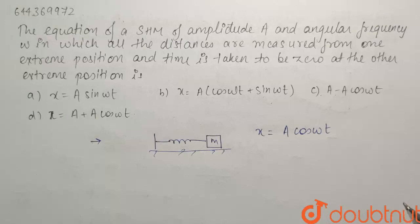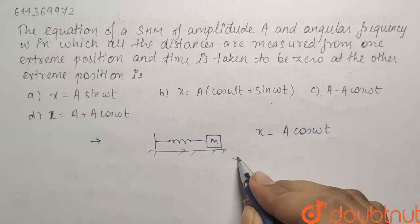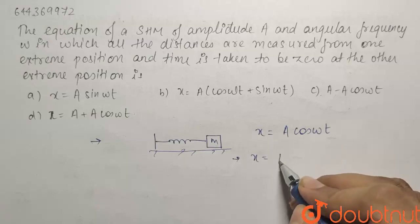What we have to do in the question is see everything with respect to the extreme position. We know from simple kinematics that if you want to see from a relative frame, you have to just add the relative displacement. So, if I want to see everything from the point of view of the amplitude, I will simply add an amplitude A.